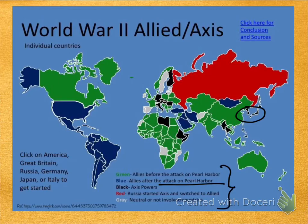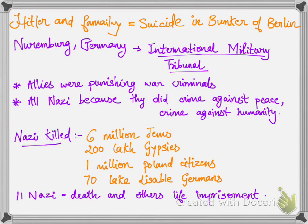In May 1945, the war ended with Germany's defeat. USA dropped two atomic bombs on the Japanese cities of Hiroshima and Nagasaki. Before 8th May 1945, Hitler, his family, and his propaganda minister Goebbels had suicided in a bunker in Berlin.